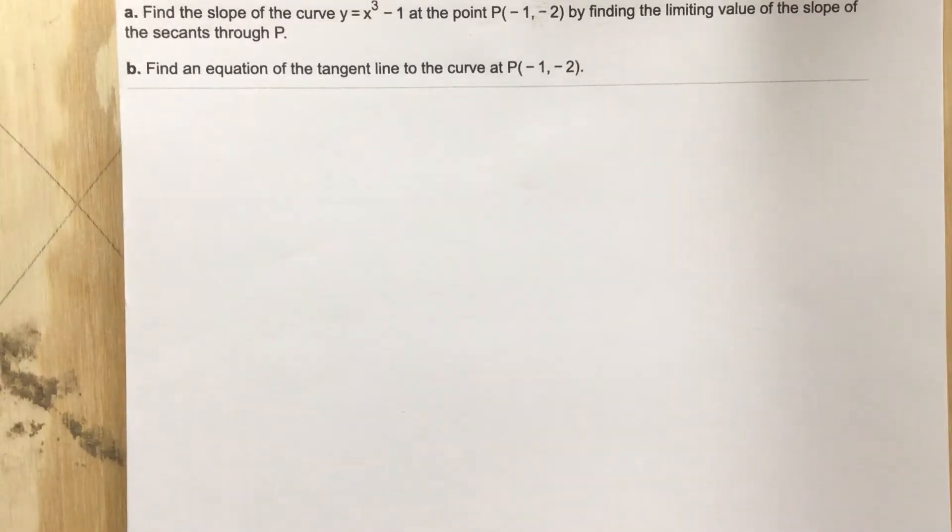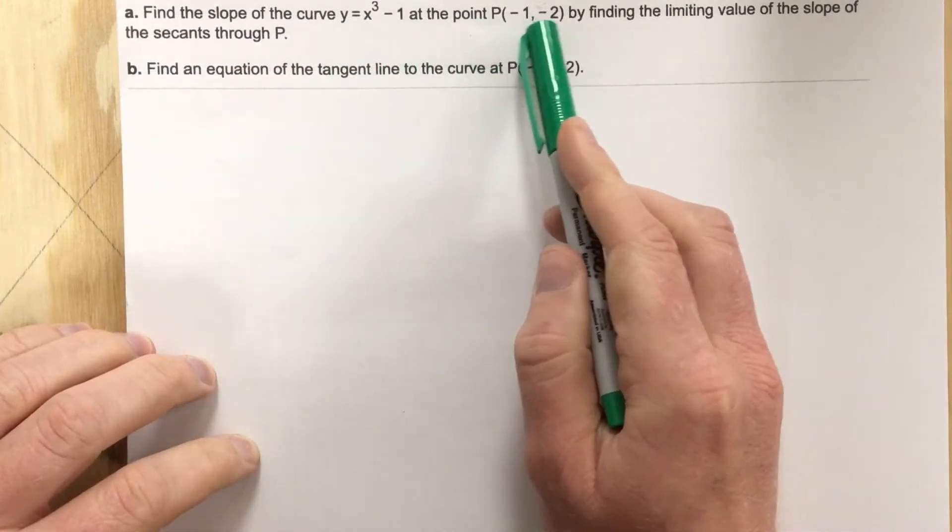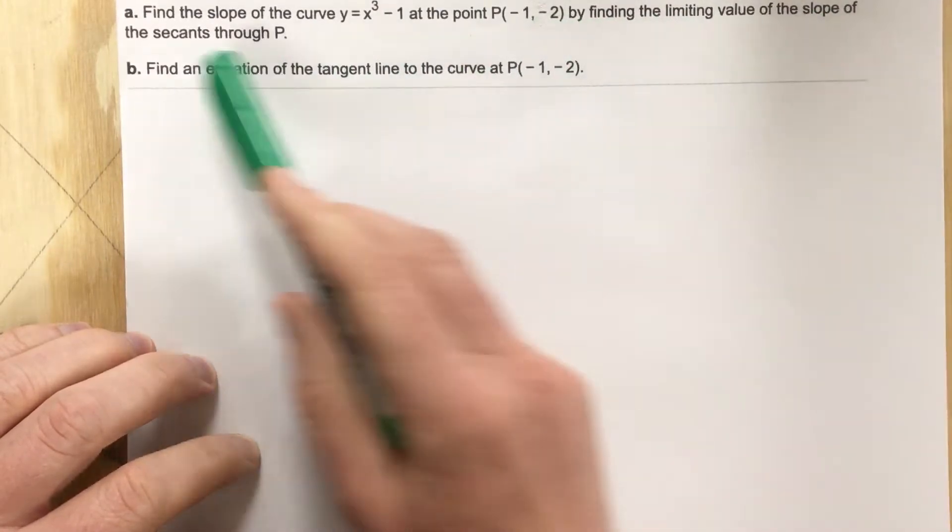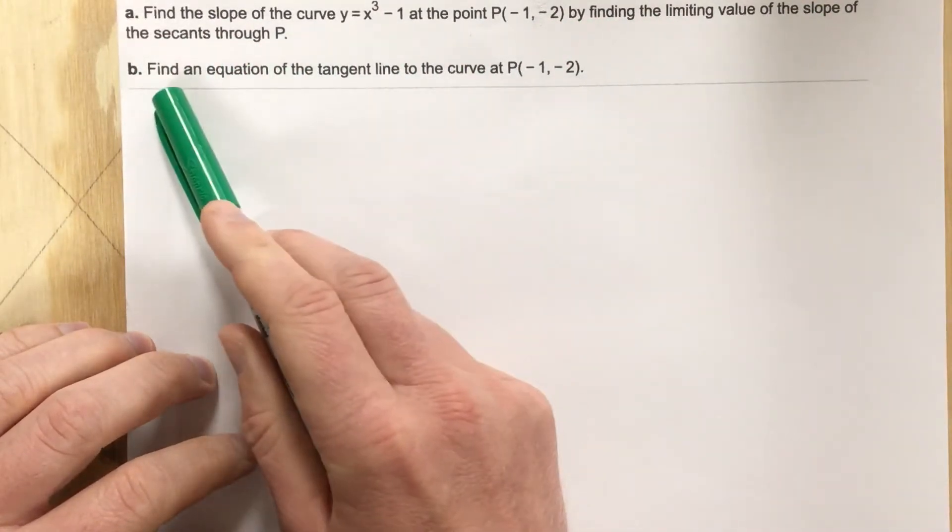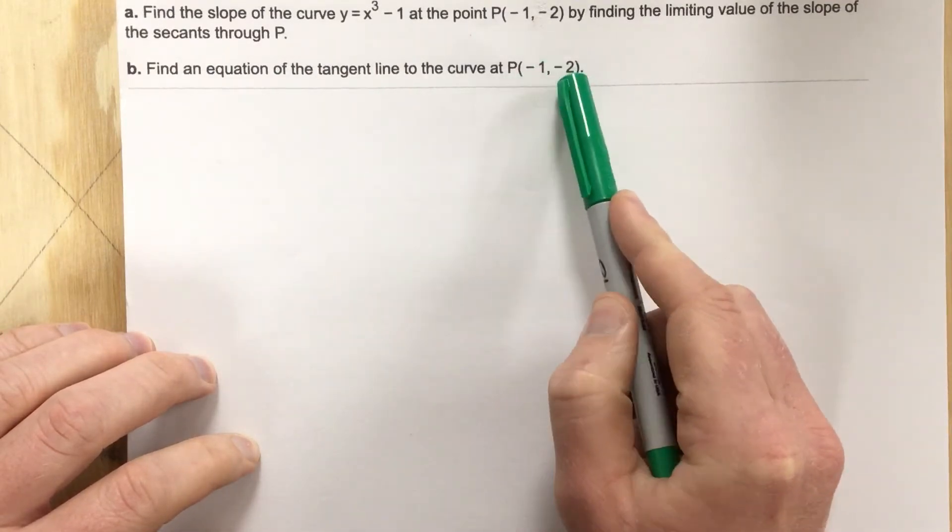This is problem number one for section 2.4. Find the slope of the curve y equals x cubed minus 1 at the point P negative 1, negative 2, by finding the limiting value of the slope of the secant through P. Find an equation of the tangent line to the curve at point P negative 1, negative 2.